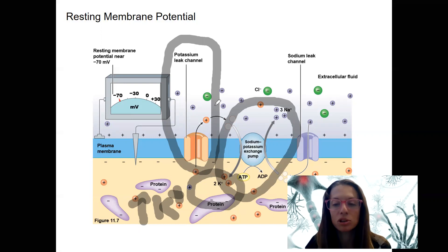So potassium flows out, leaving negative behind. That's what makes the resting membrane potential negative.